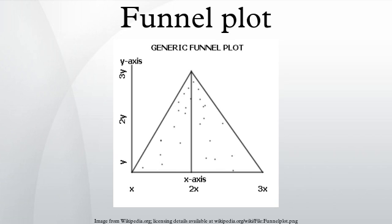In the absence of publication bias, it assumes that the largest studies will be plotted near the average, and smaller studies will be spread evenly on both sides of the average, creating a roughly funnel-shaped distribution. Deviation from this shape can indicate publication bias.